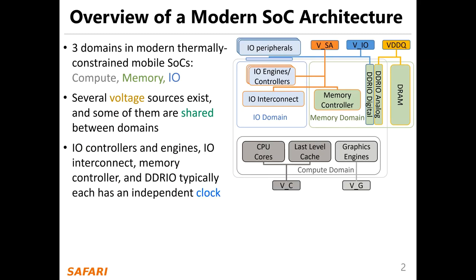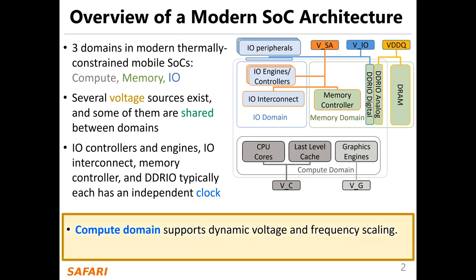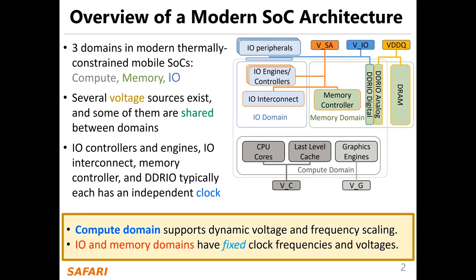Many components in the SOC normally have their own clock, such as IO controllers and engines, IO interconnect, memory controller, and DDR-IO. Typically, each has an independent clock. In these systems, compute domains support dynamic voltage and frequency scaling, while IO and memory domains have fixed clock frequencies and voltage.